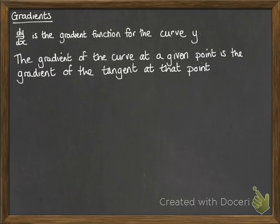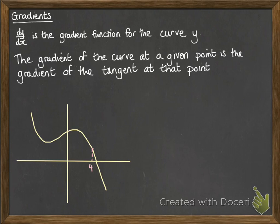So the gradient of the curve at a given point is the gradient of the tangent at that point. So it looks like this. We've got a curve, and say we wanted to know what the gradient was at 4, we would need to draw a tangent at that point and calculate the gradient of that tangent. That would tell us what the gradient of the curve was there.